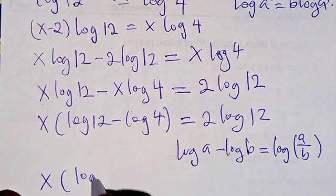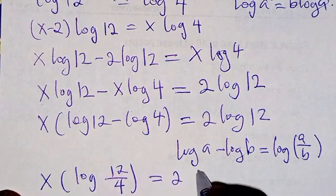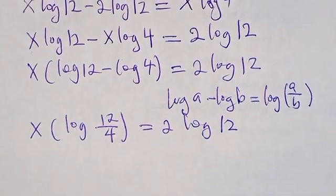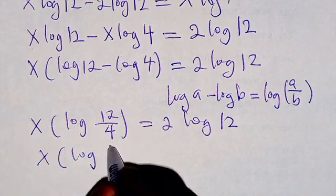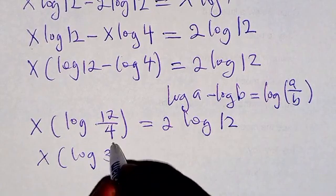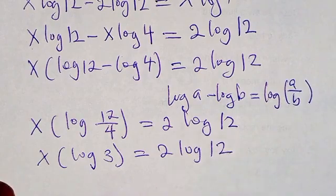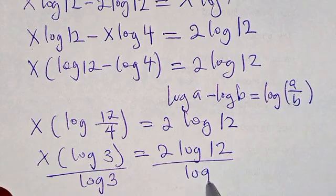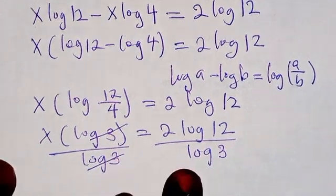Applying the subtraction law, x log 12 minus x log 4 becomes x log (12 divided by 4), which equals x log 3. So we have x log 3 equals 2 log 12. We are looking for the value of x, so we divide both sides by log 3. Are you following?